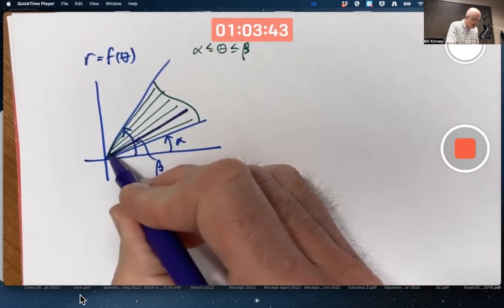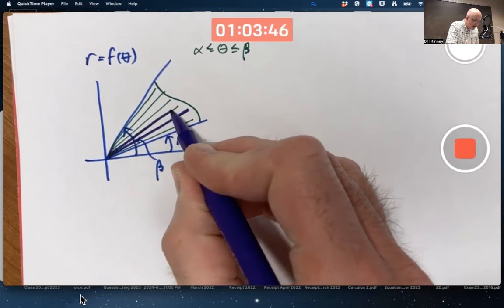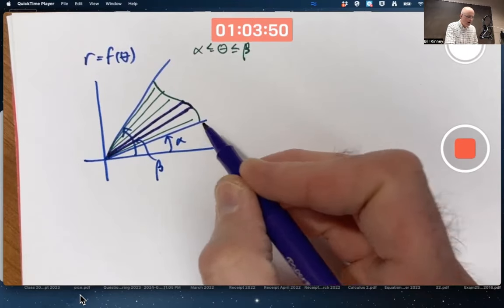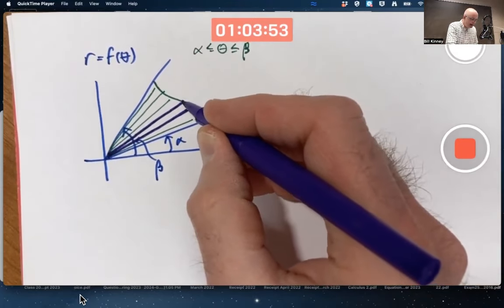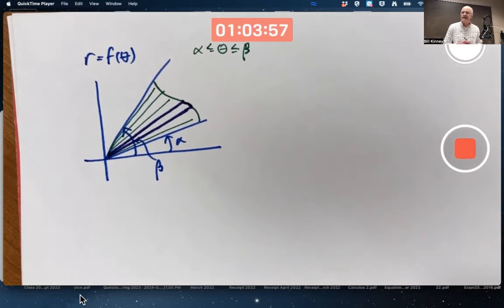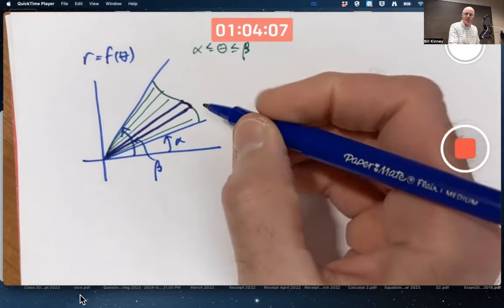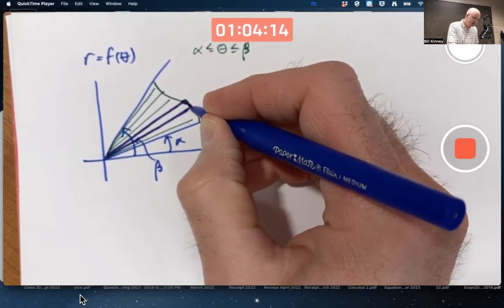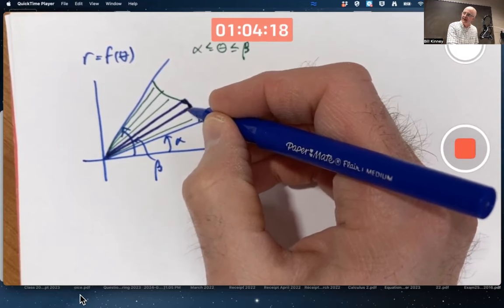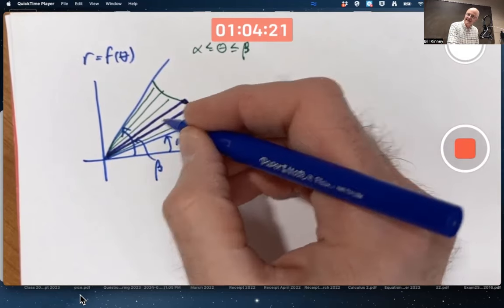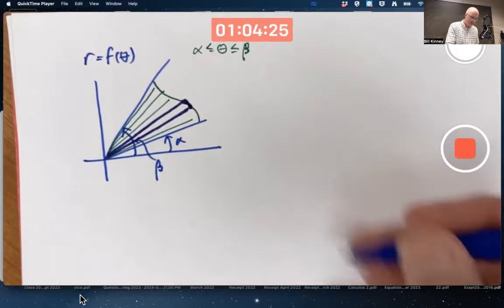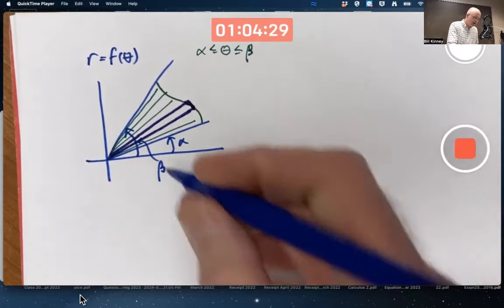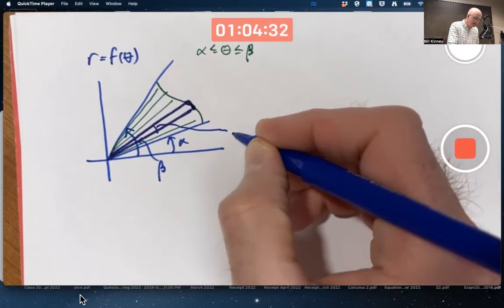For a small change in the angle, you get a thin, not rectangle, but this kind of shape. The end of it is curved here, so it's not quite a piece of pizza, but it's close to a piece of pizza, a very skinny piece of pizza. And so maybe I should approximate it as a piece of pizza, use a little piece of a circle up here instead. Call this little angle delta theta.